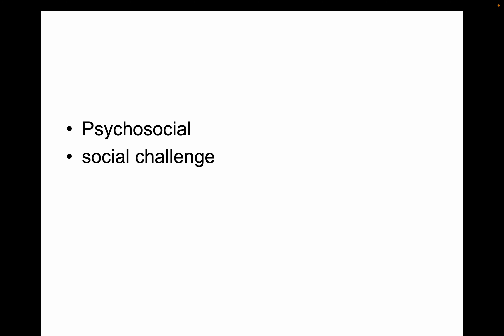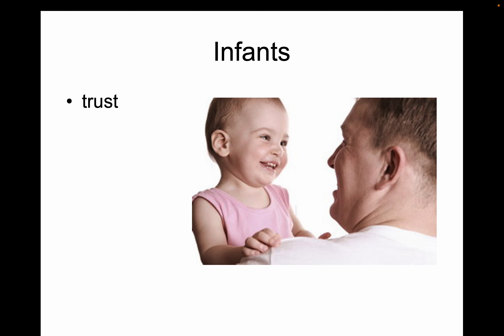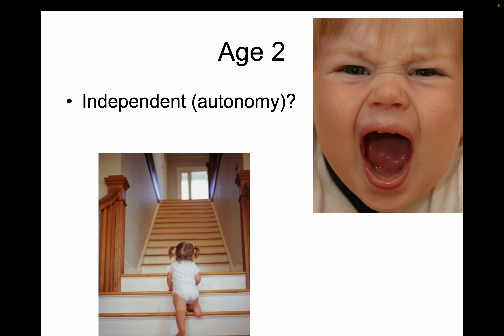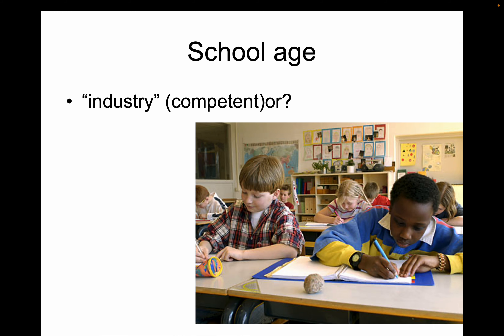Adolescence — there's a lot here. Erik Erikson talked about psychosocial challenges. At different stages in life, we have different needs. Stage one: infants need to trust their parents — if they don't, they will mistrust. Stage two: a two-year-old needs independence — he called this autonomy. If they don't get it, they'll feel doubt or shame.